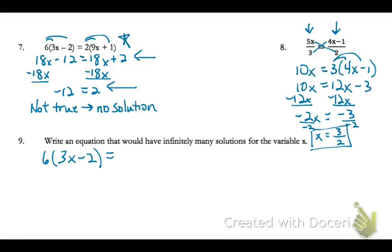So remember, this side will equal 18x minus 12, and so now I'm going to rewrite this side, so it will also be 18x minus 12. So I think 2 times what will give me a negative 12?